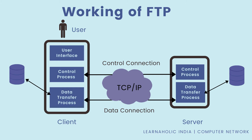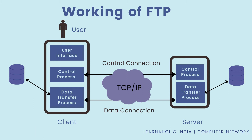Now let's see the working of FTP. The figure shows the basic model of FTP. The FTP client has three components: the user interface, control process, and data transfer process. The server has two components: the server control process and the server data transfer process. When you want to copy files between two computers on the same local network, you can simply share a drive or folder and copy files the same way you would on your own PC.